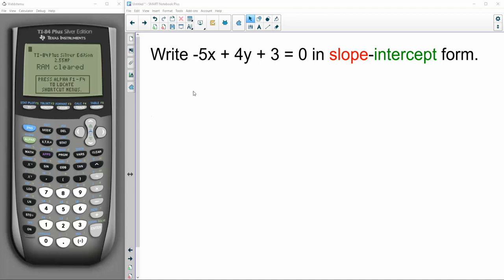Mr. Kaczynski here. Looking at this problem, I was thinking about all the different ways I could answer it and solve it, and I just wanted to share it with you. So kind of a freebie here. Write negative 5x plus 4y plus 3 equals 0 in slope-intercept form.